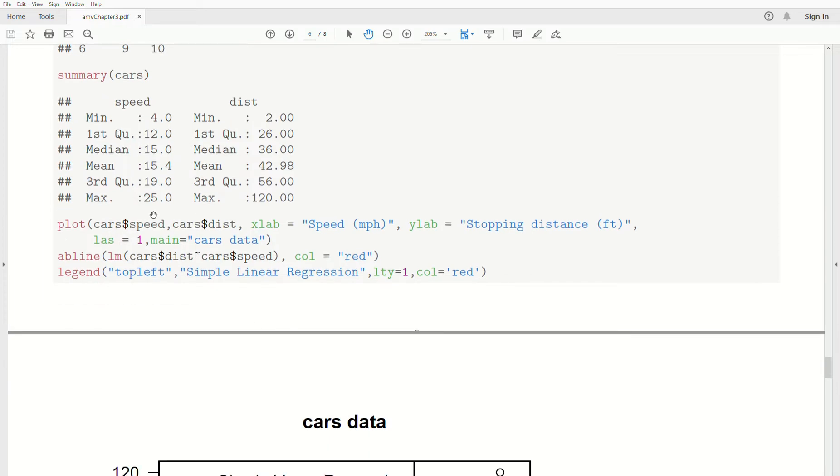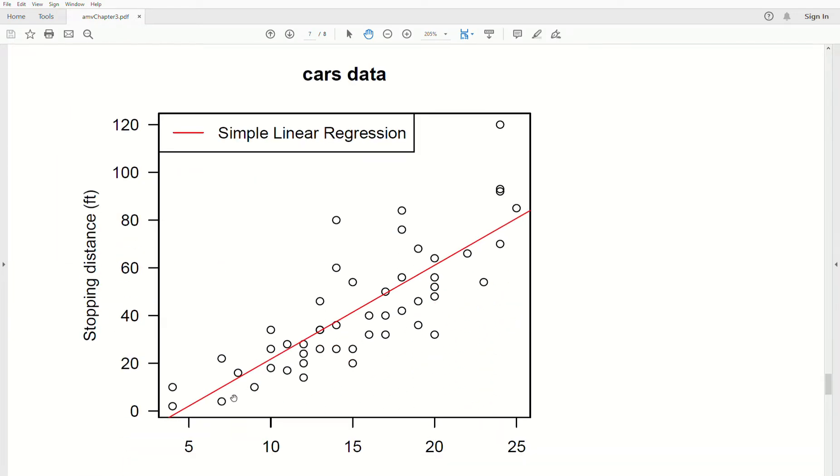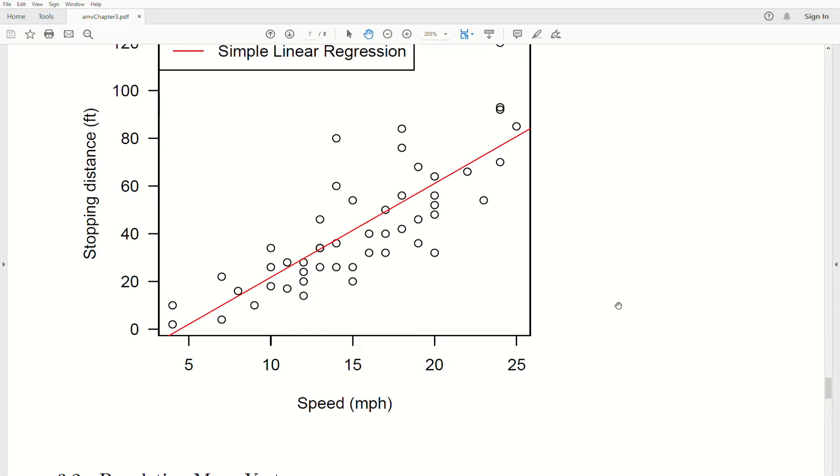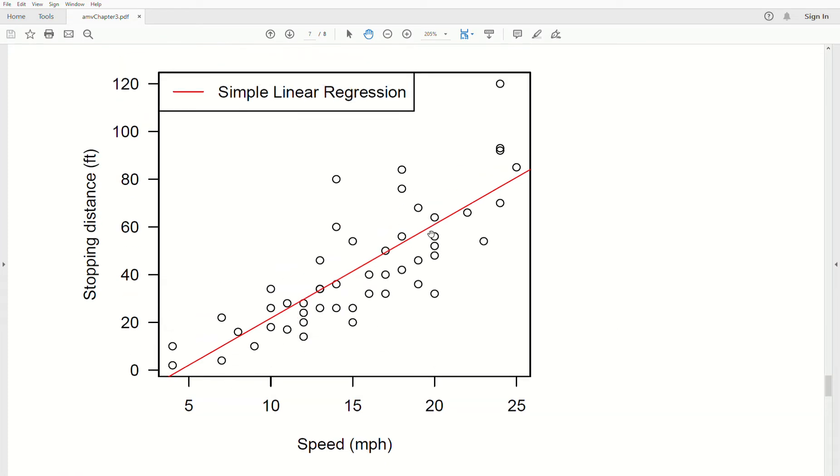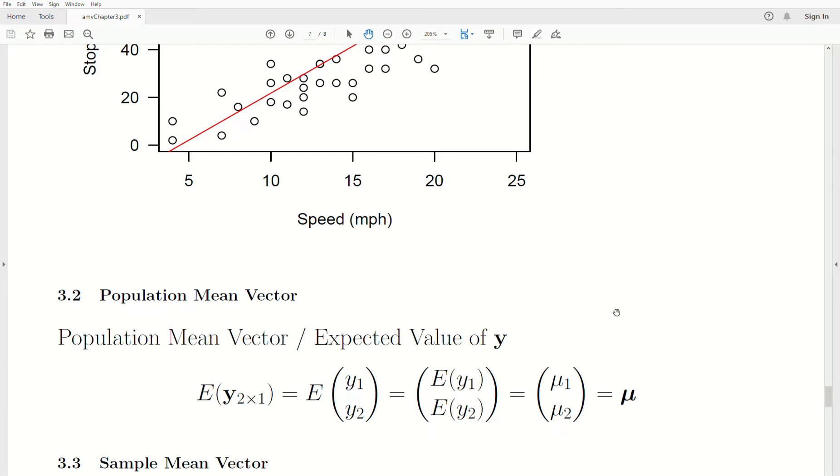Let's plot the data. We're not going to review the code necessarily, but it looks like this. The speed is on the x-axis, stopping distance is on the y. We plot it, and we could even plot a simple linear regression line, which will play a part when we look at covariance. I'm foreshadowing there.